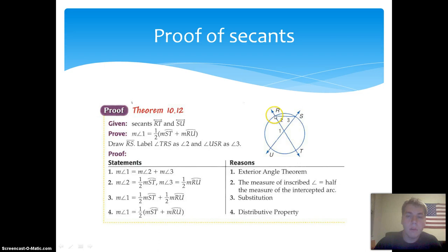By substitution, the measure of angle one is equal to one half the measure of arc ST plus one half the measure of arc RU, which by the distributive property equals one half times the quantity arc ST plus arc RU.